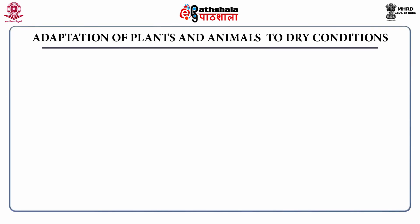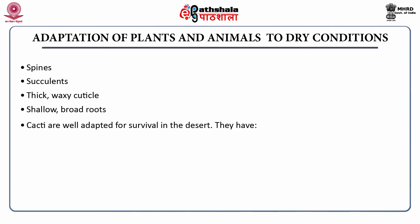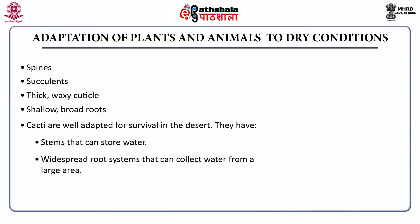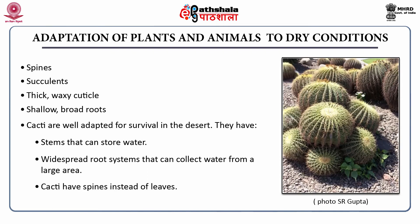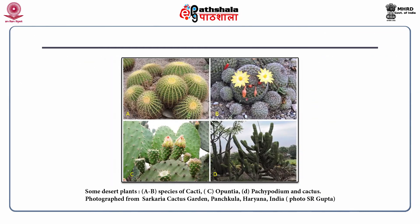Plants and animals have many adaptations to dry conditions. Examples include spines, succulents, thick waxy cuticle, and shallow broad roots. Cacti are well adapted for survival in deserts — they have stems that can store water, widespread root systems that collect water from a large area, and spines instead of leaves. Some desert plant species shown include Opuntia and Pachypodium, photographed at the Cactus Garden in Panchkula, Haryana.